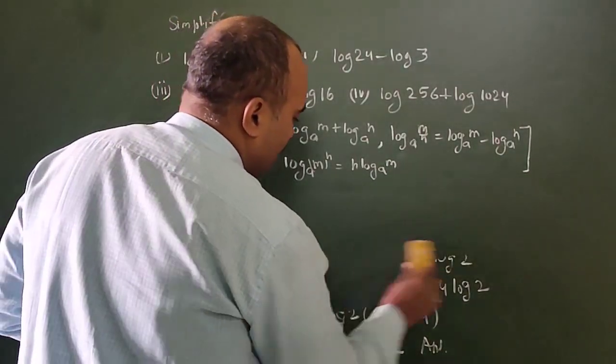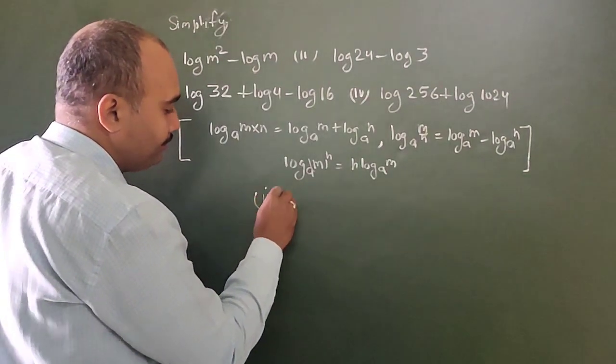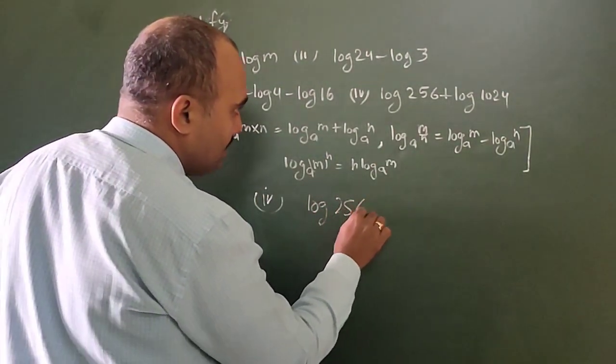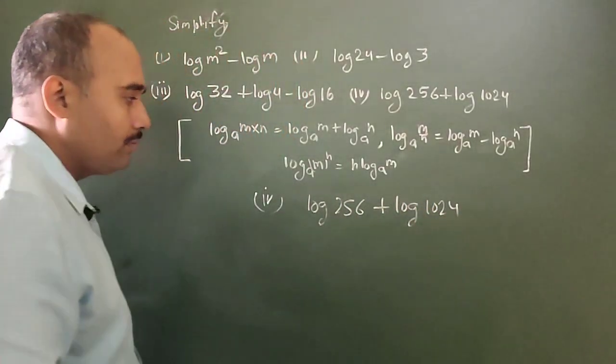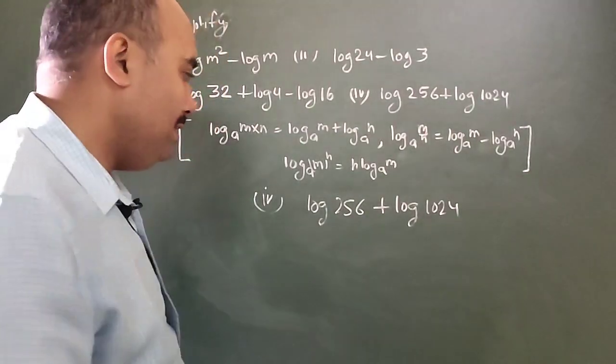Okay, now look at the fourth question carefully. Log 256 plus log 1024. Okay, now these numbers are quite big, so we will factorize them.